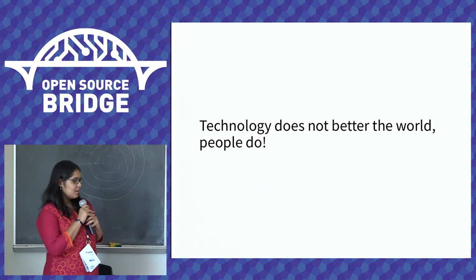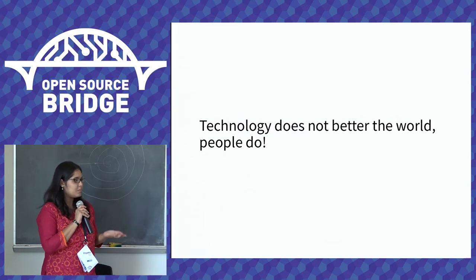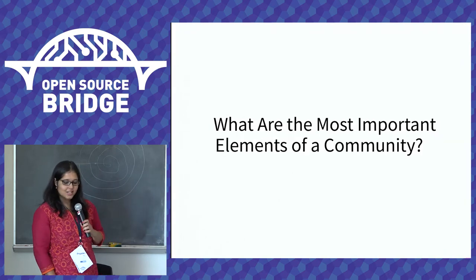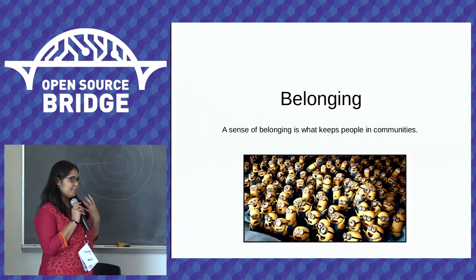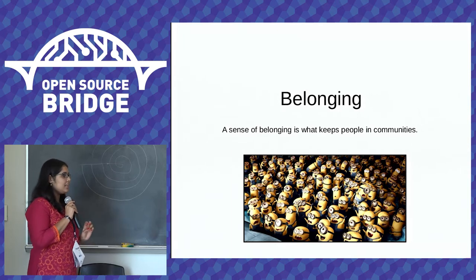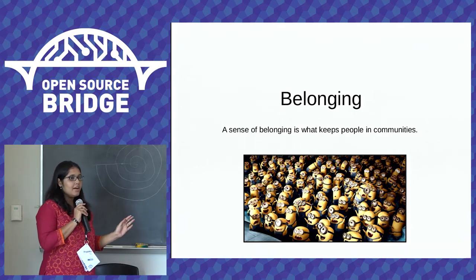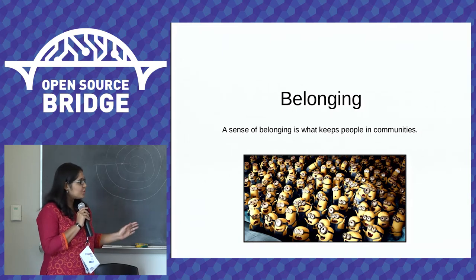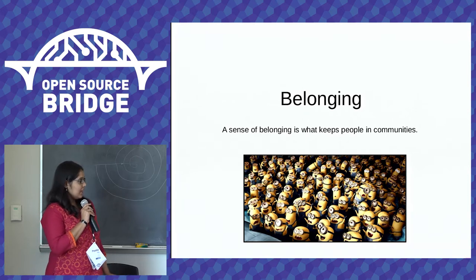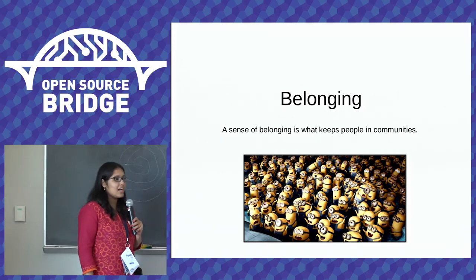I love this statement: we all work or we are technology dependent, but is it technology that is making the world better, or is it people? I believe it's people who make the world better. So what are the most important elements of a community? The very feeling of belonging is the most important or key element of any community. Unless I feel connected, unless I feel I belong to that group, it's very difficult for me to say I'm a part of that community. I can contribute without being a part of a community — I can send code patches to a project — but without needing to call myself a member.